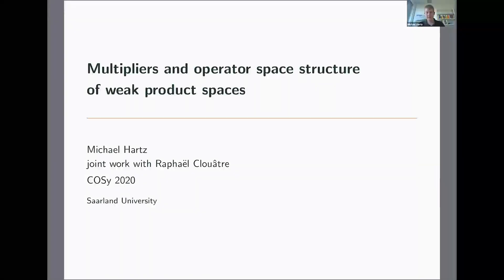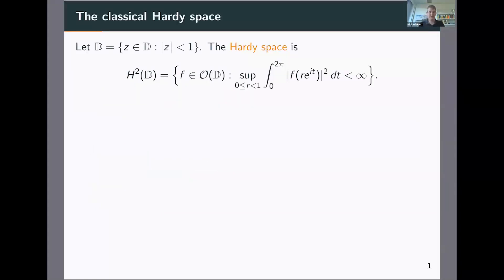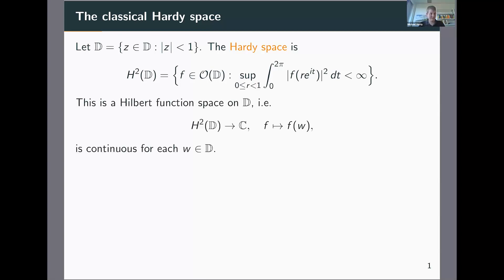This is a joint work with Raphael Kloata, who's at the University of Manitoba in Winnipeg. Let me start with something quite classical, which is the Hardy space H2 of the unit disk. It can be defined in various ways. One of them is it consists of all those holomorphic functions whose L2 norms over a circle centered at the origin are uniformly bounded. This is a Hilbert space which consists of analytic functions, and it's an example of what's called a Hilbert function space, which means that for every point in the domain, the function of point evaluation is bounded on the Hilbert space.